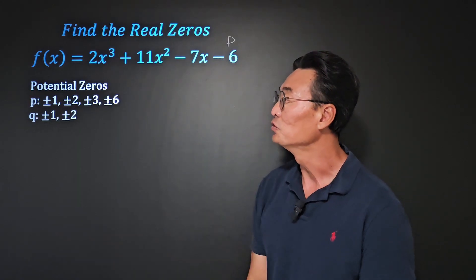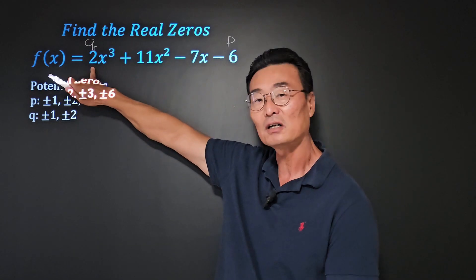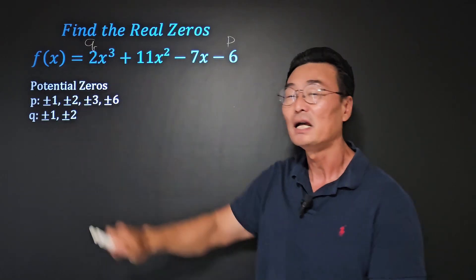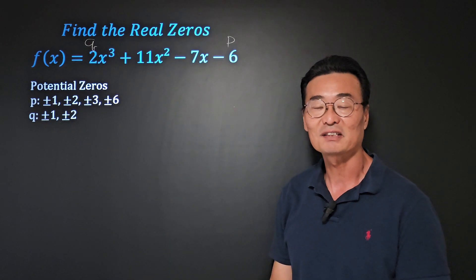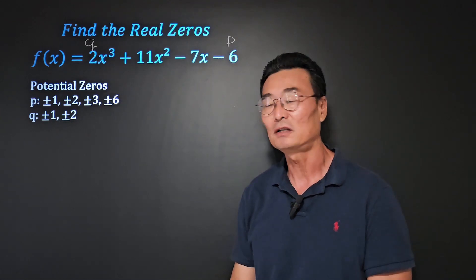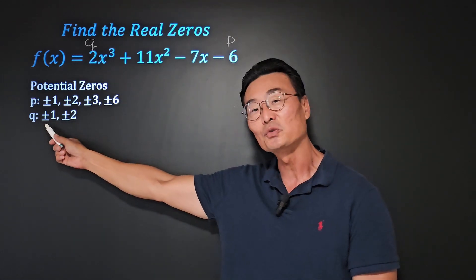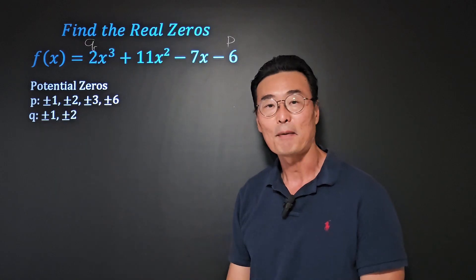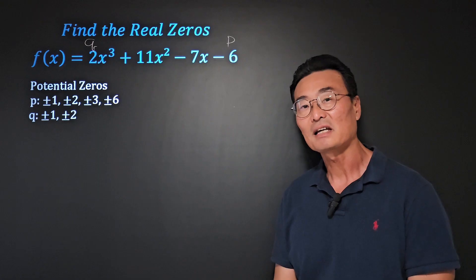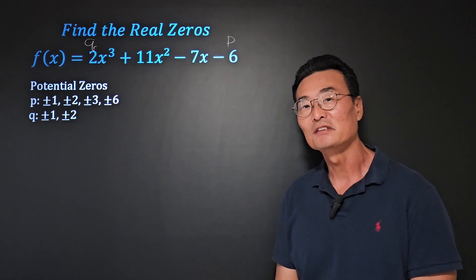Next, we need to find q's, and q's are going to be the factors of the coefficient of x cubed, or 2 in this case. The factors of 2 are 1 and 2, and once again we need to go ahead and add a plus minus.